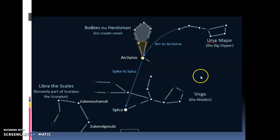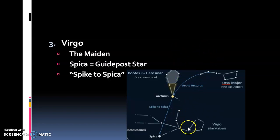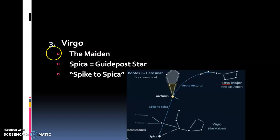Spica is the guidepost star of Virgo. Virgo is a maiden — a womanly figure. We can see a figure illustrated here, which makes me feel better about my own artistic ability. She is the maiden, and as we said, Spica is the guidepost star — you spike down to Spica.